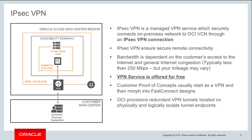Whenever you create an IPSec VPN connection on OCI, we automatically create multiple redundant tunnels on the OCI headend to provide redundancy. These tunnels are physically and logically isolated. We'll go into more detail on this in the next couple of slides.